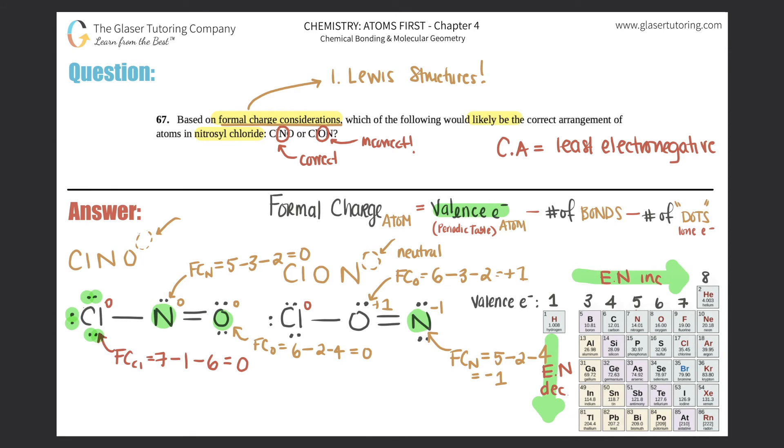So which one is correct? Formal charge considerations basically means the less charges, the better. Compounds, molecules, they don't want any charges. If you have charges, that means that it's less stable. So a compound like this being all neutral is much more stable than a compound having a zero, a plus one, and a negative one charge.